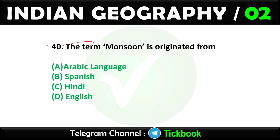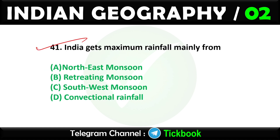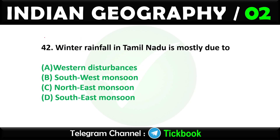Question forty: The term 'monsoon' is originated from. Option number A: Arabic language. Question forty-one: India gets maximum rainfall mainly from. Option number C: South West Monsoon. Question forty-two: Winter rainfall in Tamil Nadu is mostly due to. Option number C: North East Monsoon.